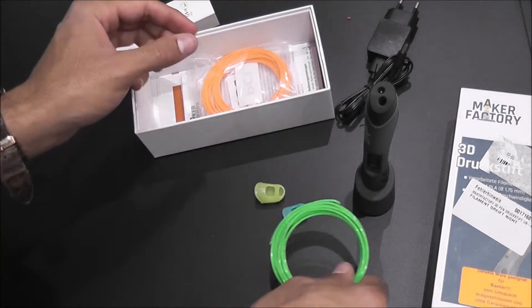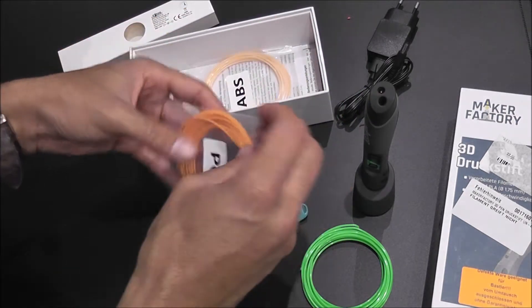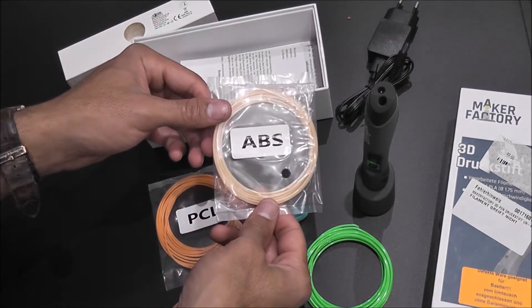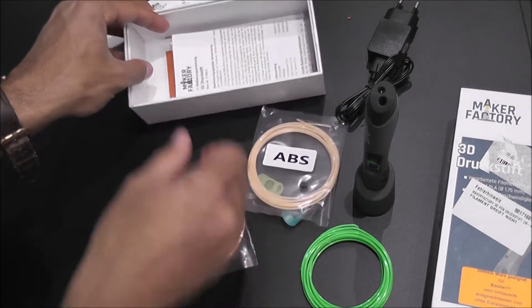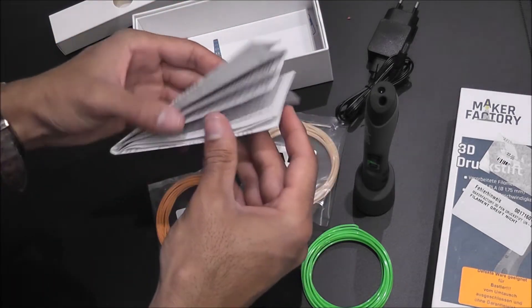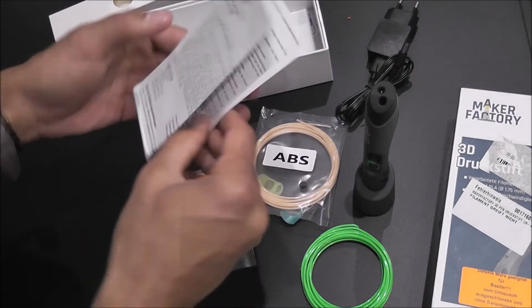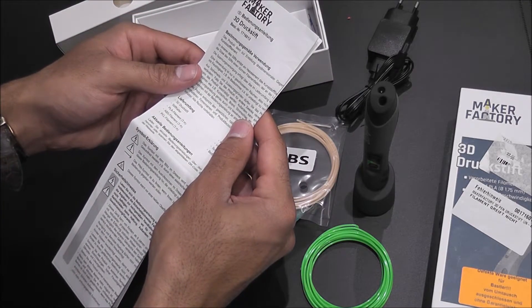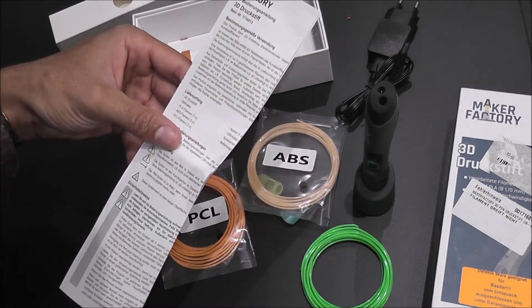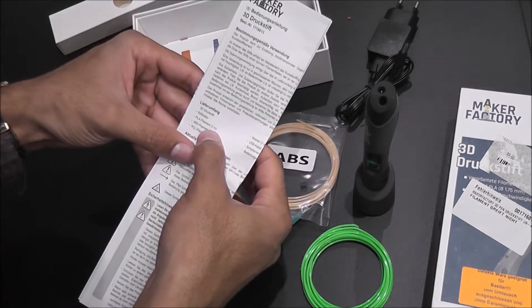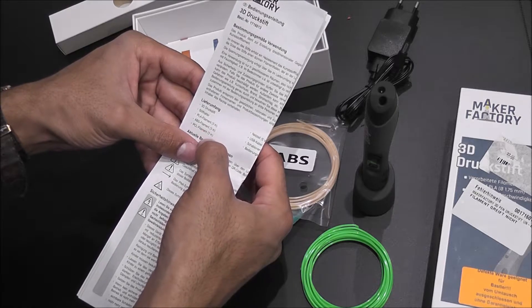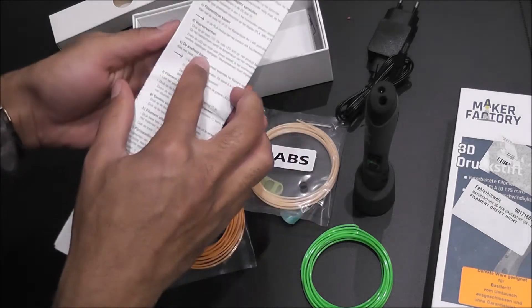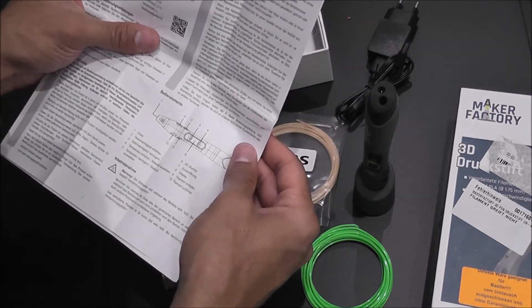This one is PLA, I took this one out earlier, and this is PLC, and we have also ABS. A couple of instruction manuals. We've got three meters of PLA, ABS and PLC, so that's how much is in there.